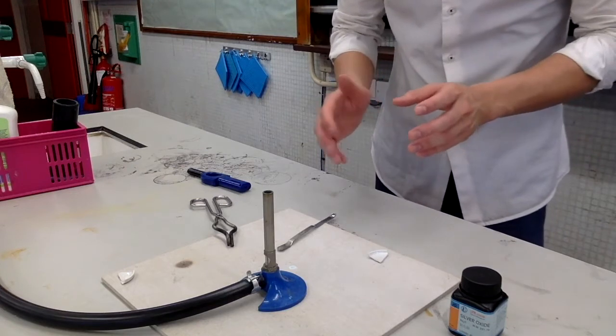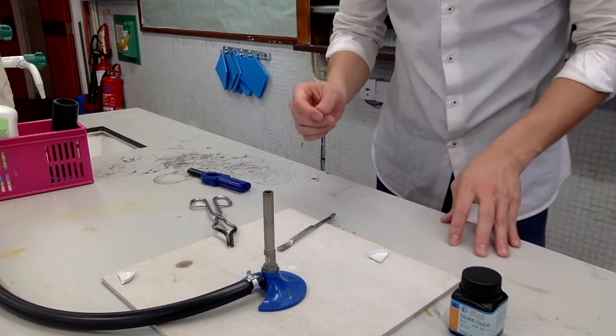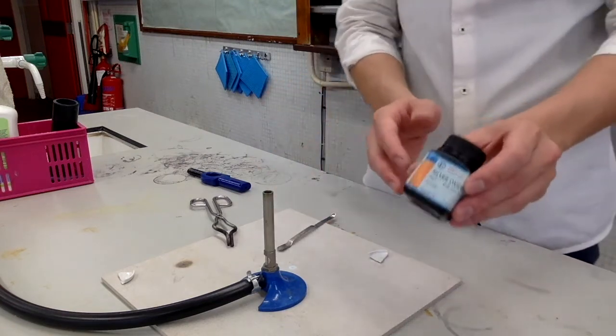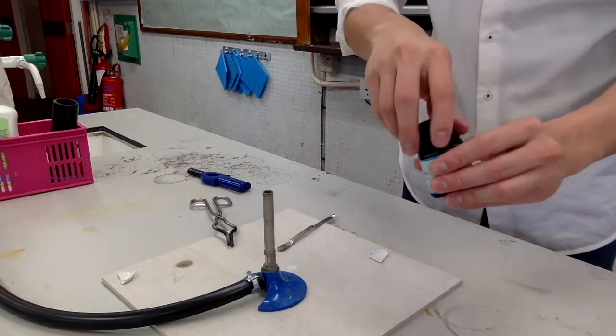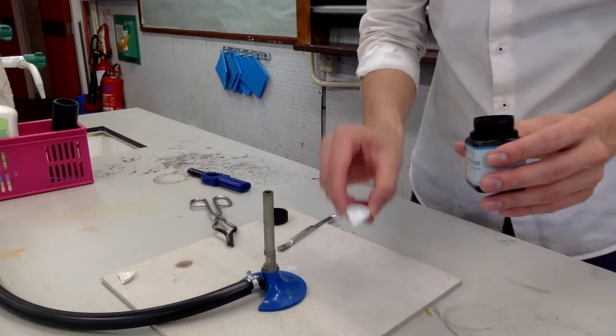Now we are going to demonstrate how to extract silver from silver oxide by direct heating. First, we have a sample of silver oxide and using a spatula we will transfer some of it onto these pieces of broken porcelain.